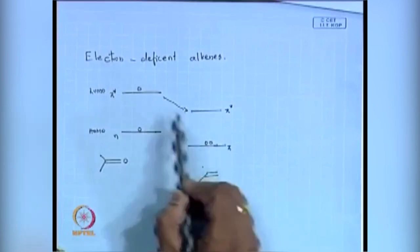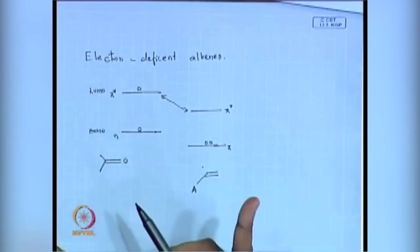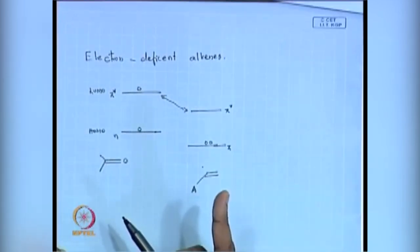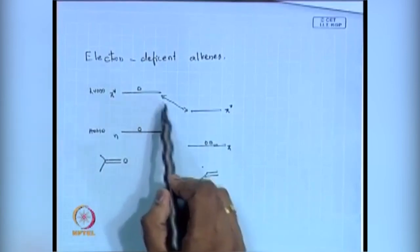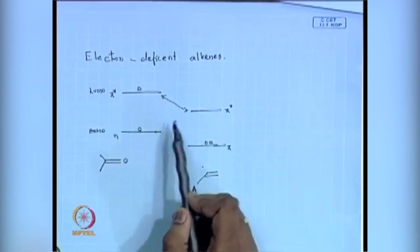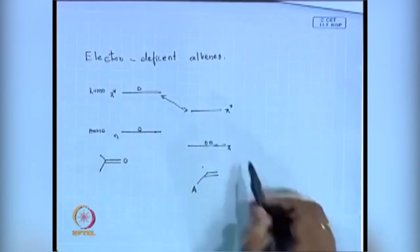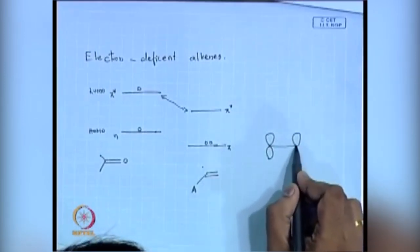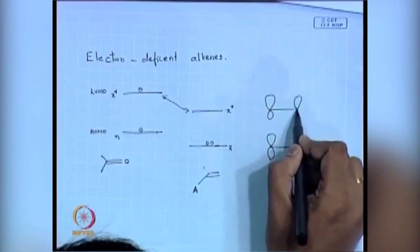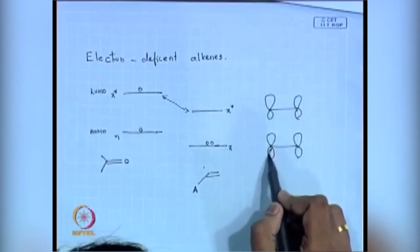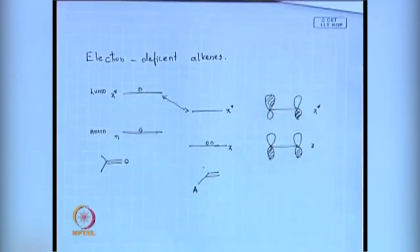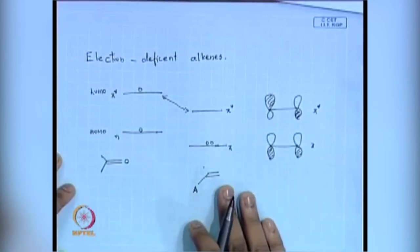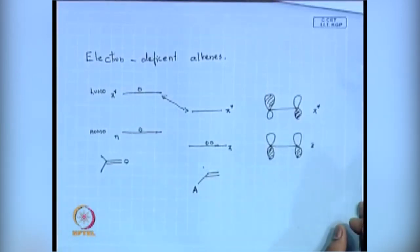But can my π* interact with this π* and start the reaction? That is possible. I can interact this and this now. So this is the first chemistry where you are going to see that the π* of your carbonyl system is involved. The non-bonded electron is not doing anything. So what my π* is trying to do is react with my π* of my alkene.